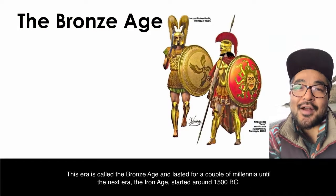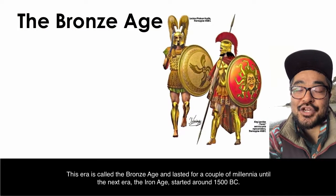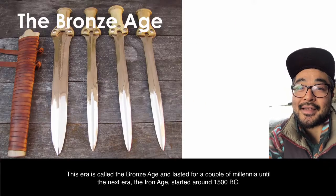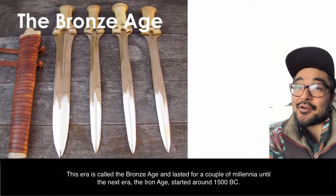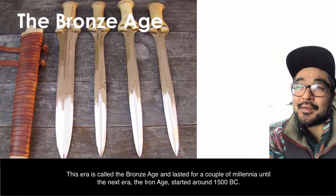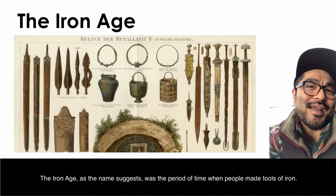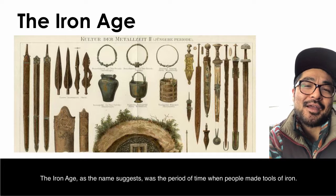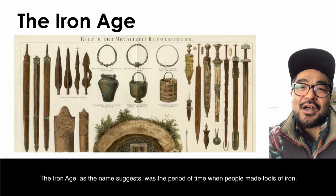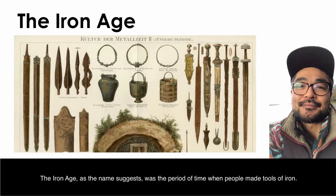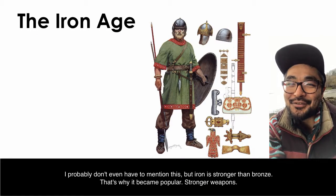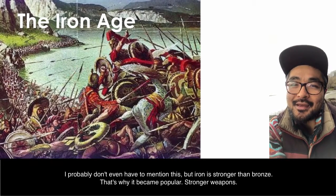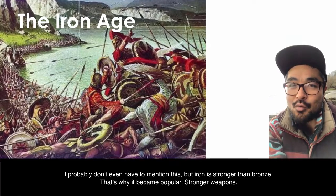This era is called the Bronze Age, and it lasted for a couple of millennia until the next era — the Iron Age — started around 1500 BC. The Iron Age, as the name suggests, was the period when people made tools of iron. Iron is stronger than bronze, so it became popular for making stronger weapons.